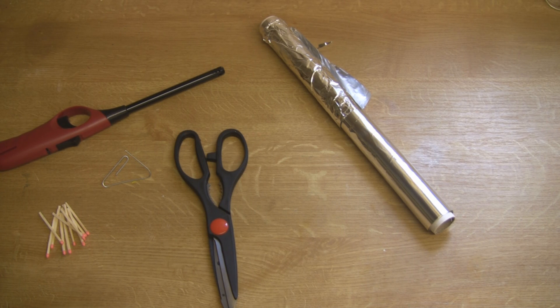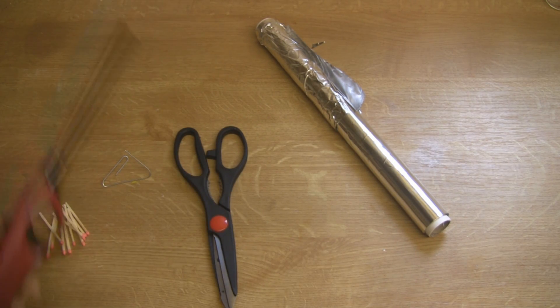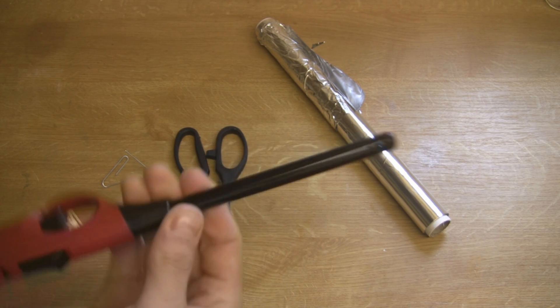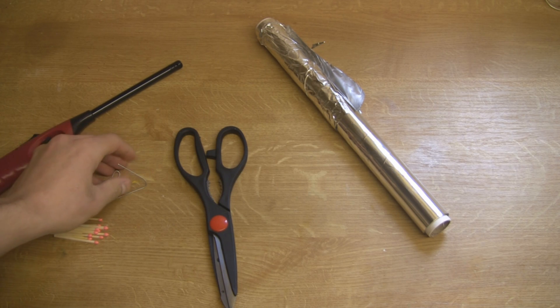We're going to make some match rockets and it's very easy and simple to do. You're just going to need a few things which you'll probably find lying around the house. We're going to need some aluminum foil, a pair of scissors, a lighter with a long spout, a cook's lighter, some matches, and a large paper clip.